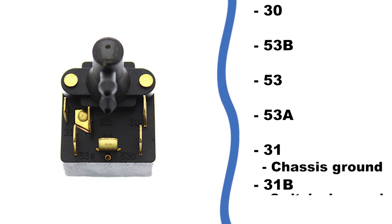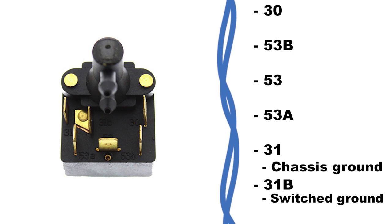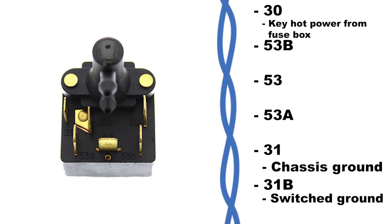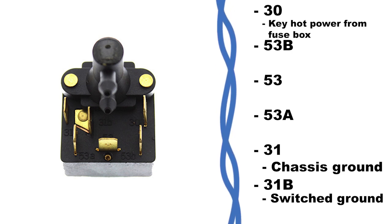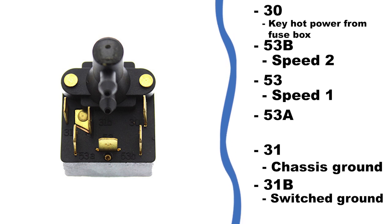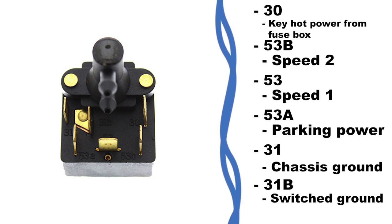The 31 terminals are both ground terminals. The 30 terminal is powered to the switch from the fuse box and the 53 terminals will be powered out to the motor at the three positions of the switch.